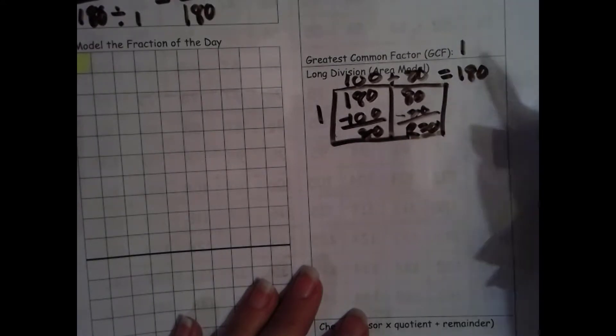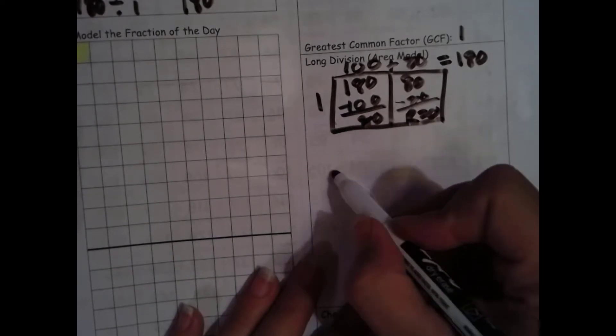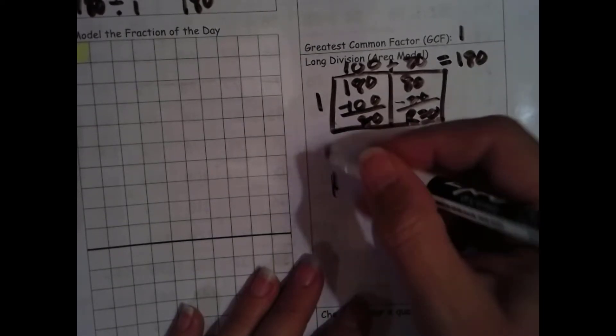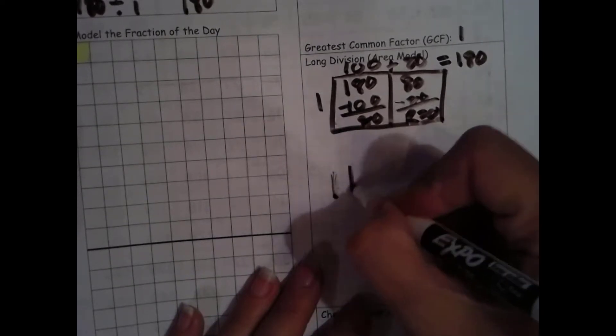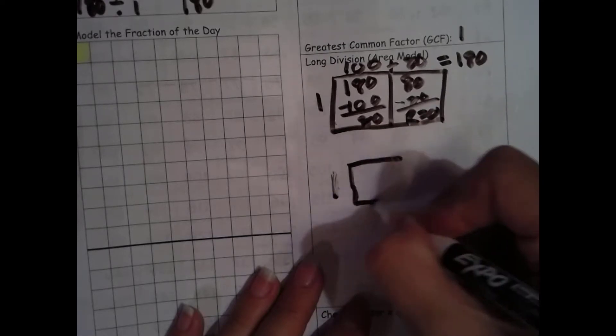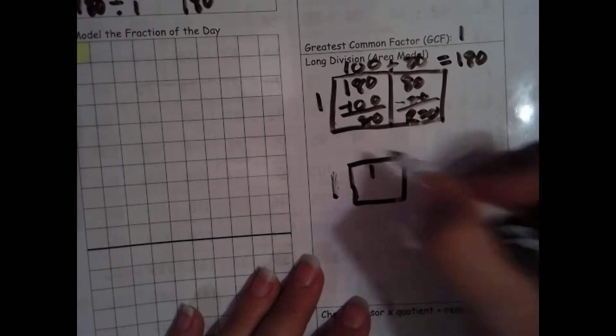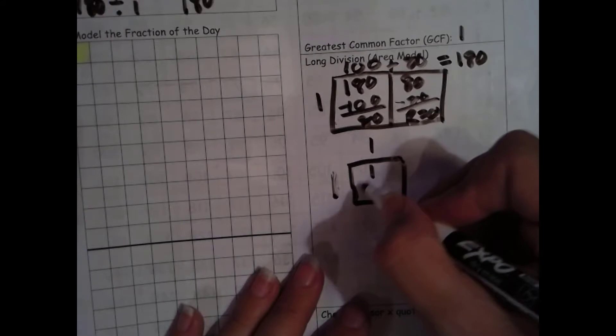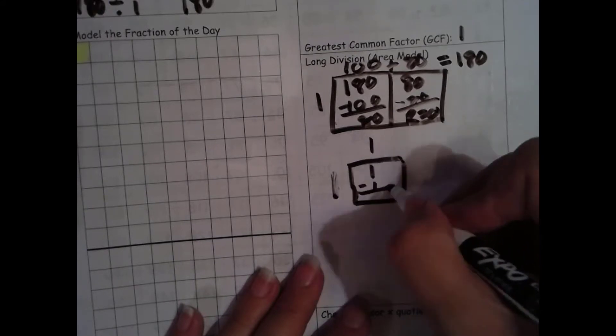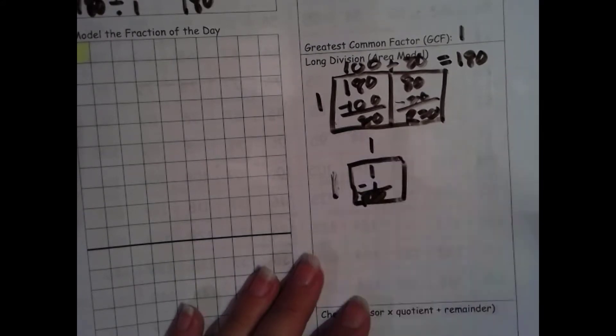100 plus 80 is 180 with no remainder. So this is our quotient. And 1 divided by 1. 1 times 1 is 1. And we get a remainder of 0.